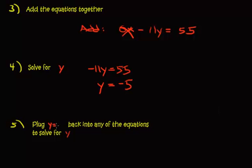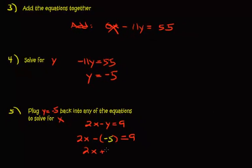Now what I'm going to do is plug y equals negative 5 back into the equation to solve for x. It could be any equation. I'm going to choose the 2x minus y equals 9. We get 2 times x minus what's going to be y, which is negative 5. That's 2x plus 5 equals 9, so 2x equals 4, subtract the 5 over. You're going to get x equals 2.